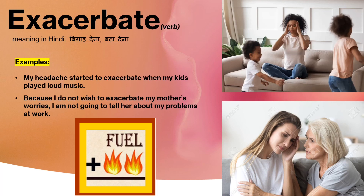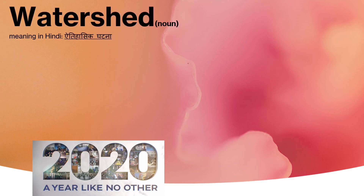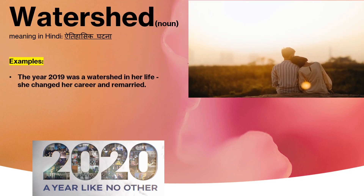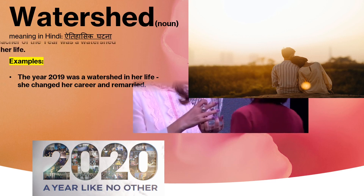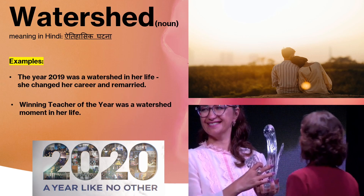An event or period that marks the turning point, or that is important because it represents a big change in how people do or think about something, is a watershed. For example: the year 2020 was a watershed year. Or you can say: the year 2019 was a watershed in her life — she changed her career and remarried.